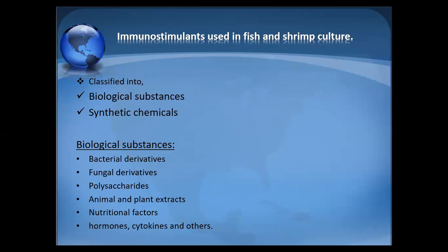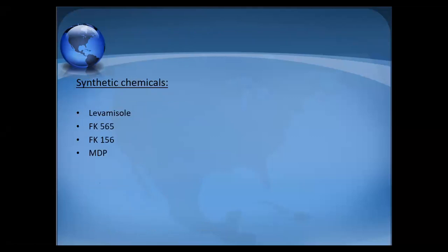Biological substances are derivatives either of plant or animal origin. Biological immunostimulants include bacterial derivatives, fungal derivatives, other polysaccharide molecules, animal or plant extracts, nutritional factors, hormones, and cytokines. Synthetic chemicals include compounds like FK565, FK156, and MDP (muramyl peptide molecules), prepared under controlled laboratory conditions.